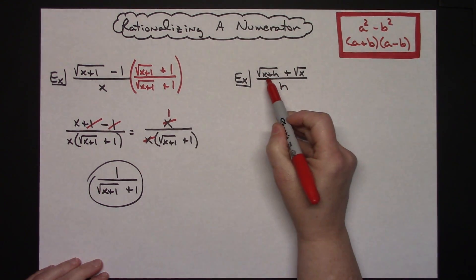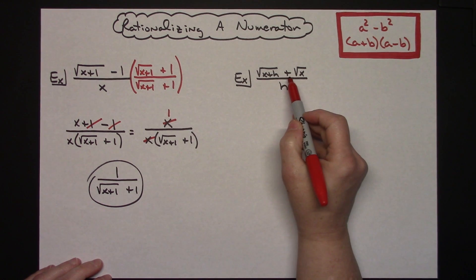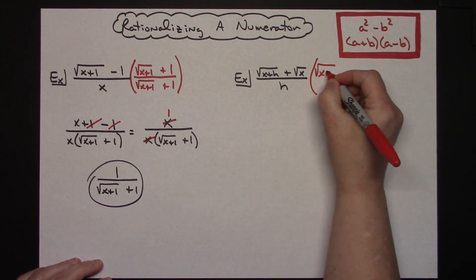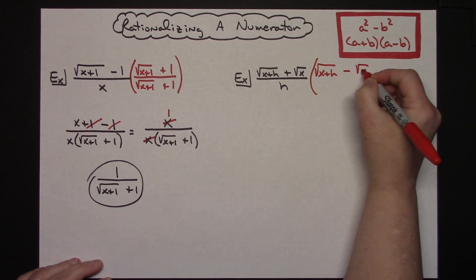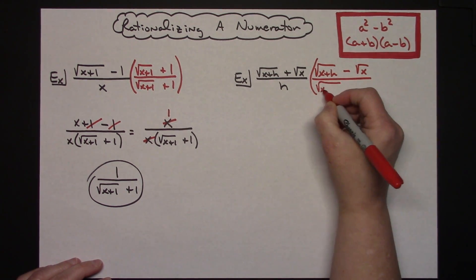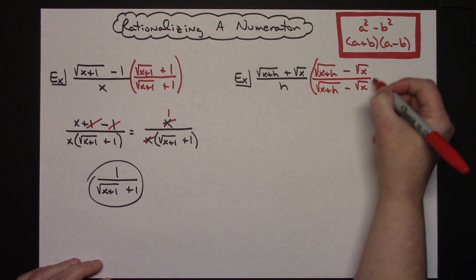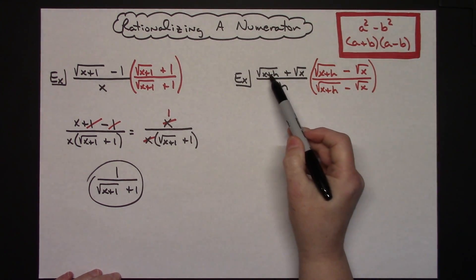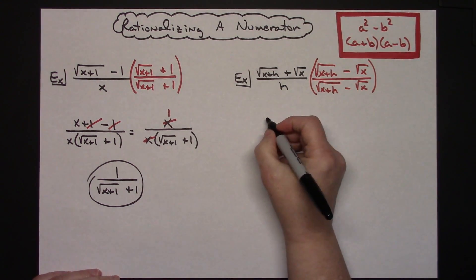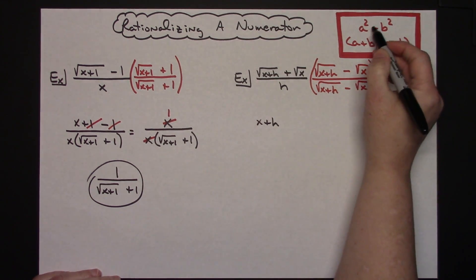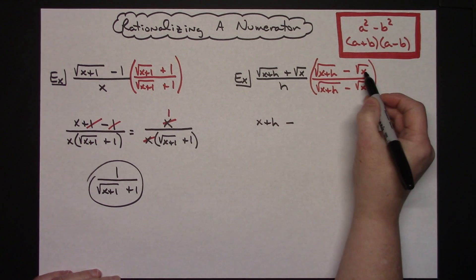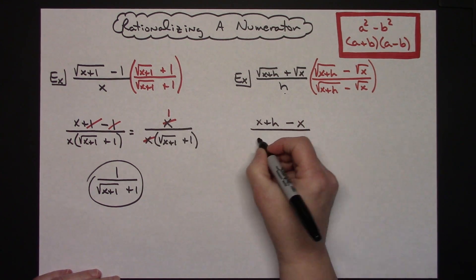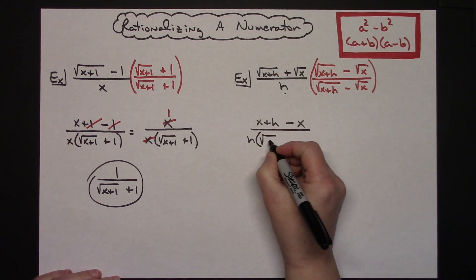Let's look at this next example. To rationalize the numerator I'm going to multiply by the conjugate, which would have the opposite sign in the middle. So I need to multiply by the square root of x plus h minus the square root of x, over itself, so that I have a form of 1. Simplifying on the top using the difference of squares formula: squaring the first radical leaves x plus h, put a minus sign, then squaring the square root of x leaves x. I'm not going to foil that denominator out because hopefully something will cross out.